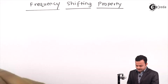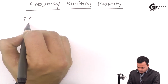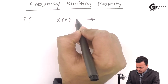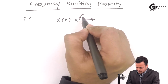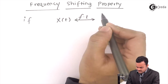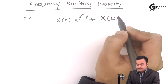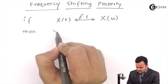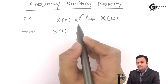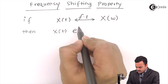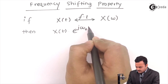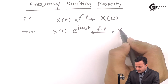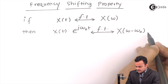So, what it states: if the Fourier transform of x(t) is given by X(ω), then the Fourier transform of x(t) multiplied by e raised to j·ω₀·t will be X(ω − ω₀).